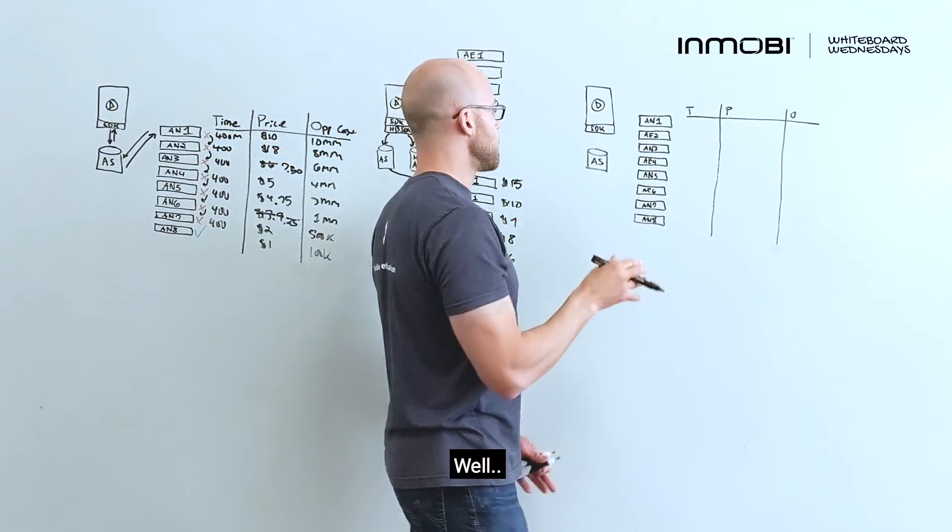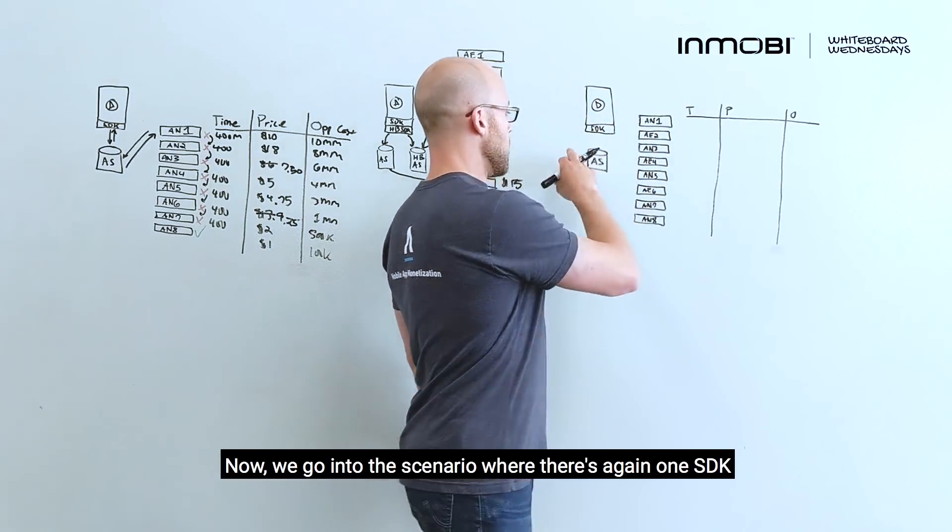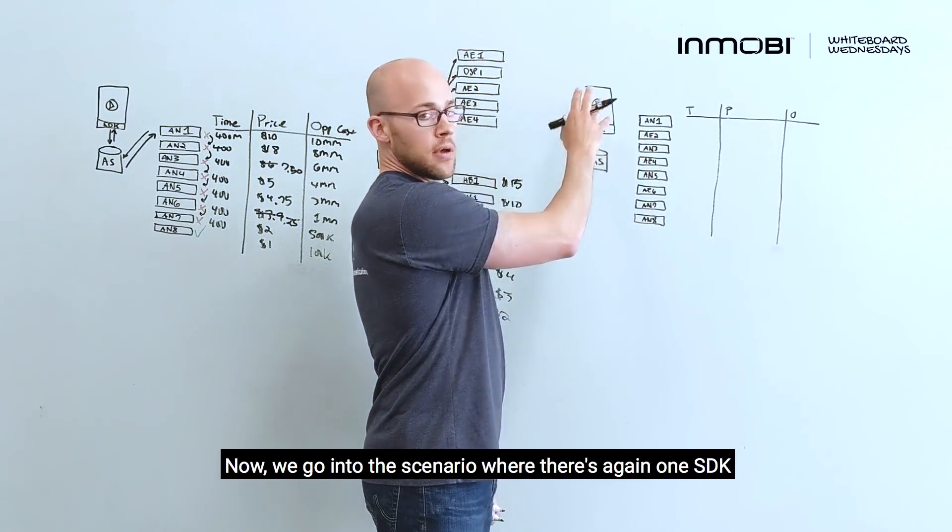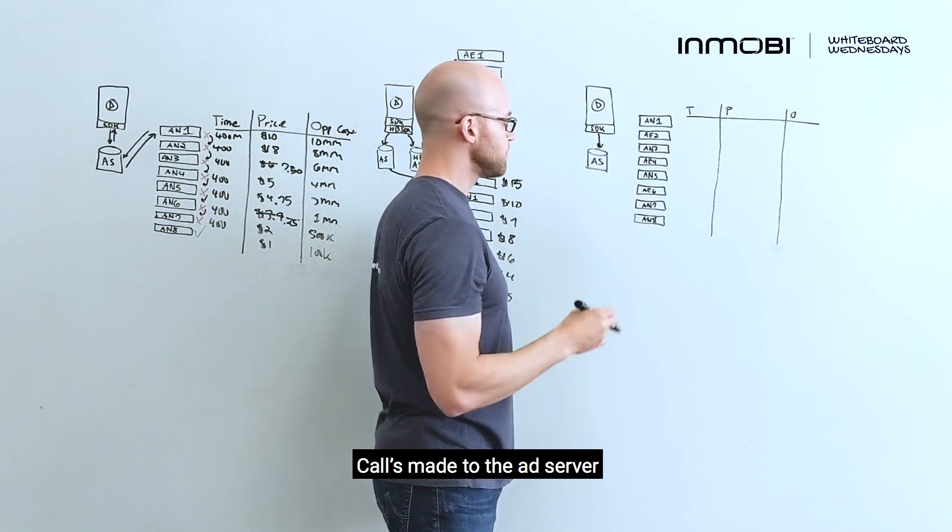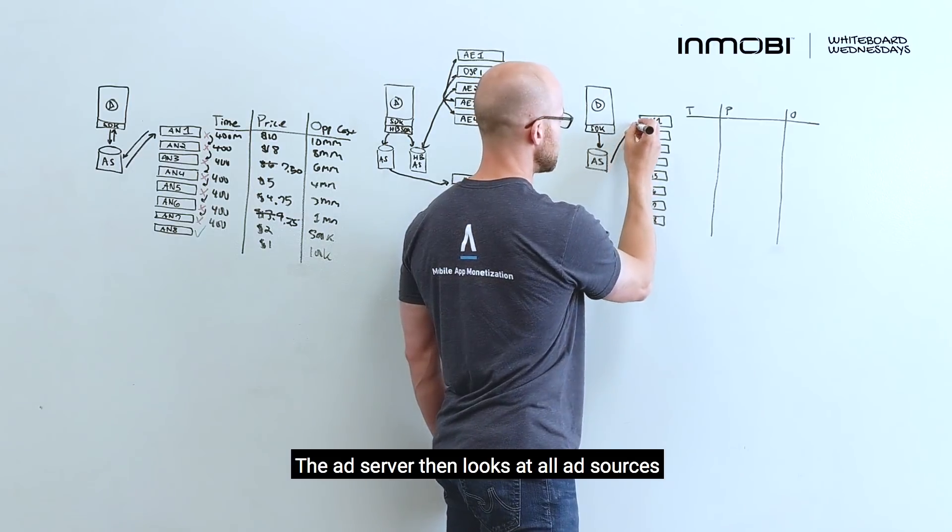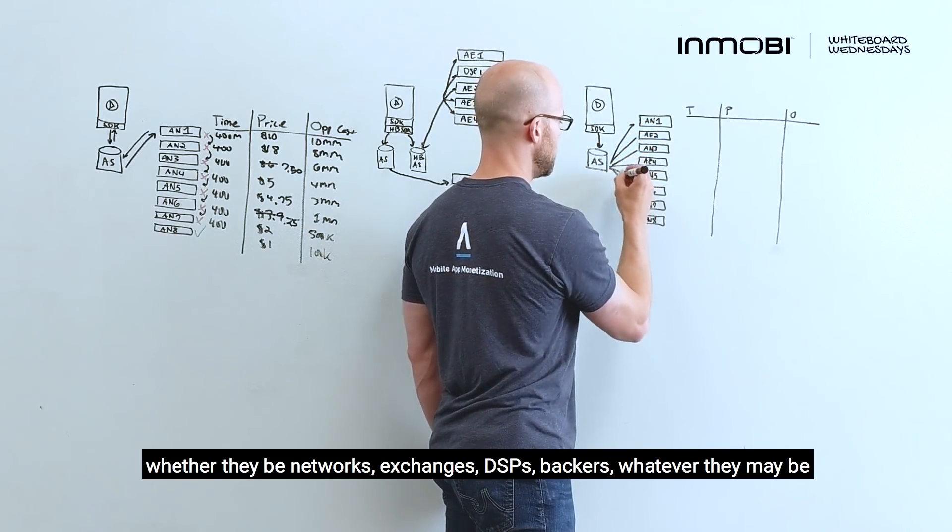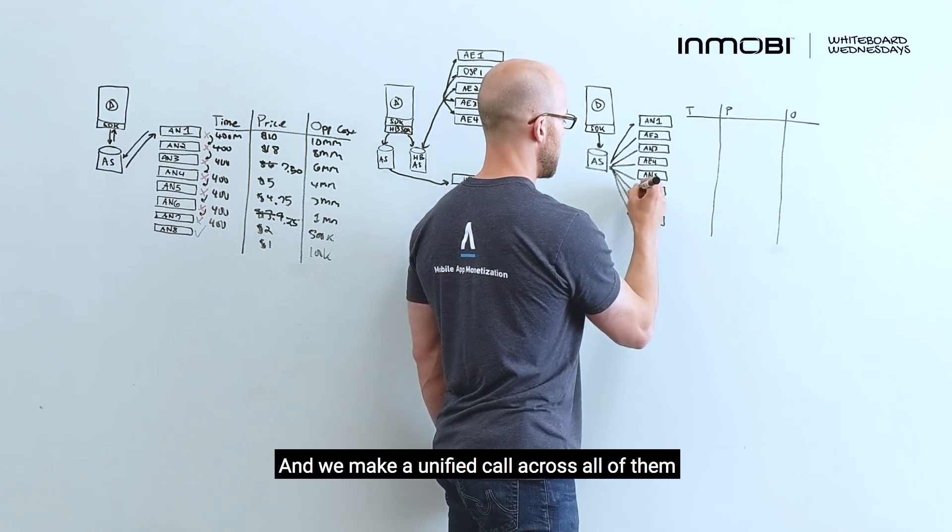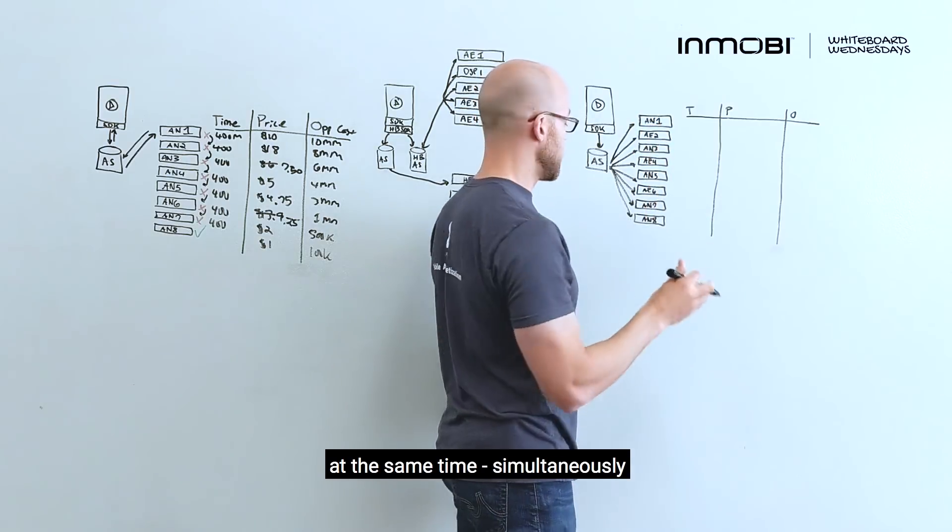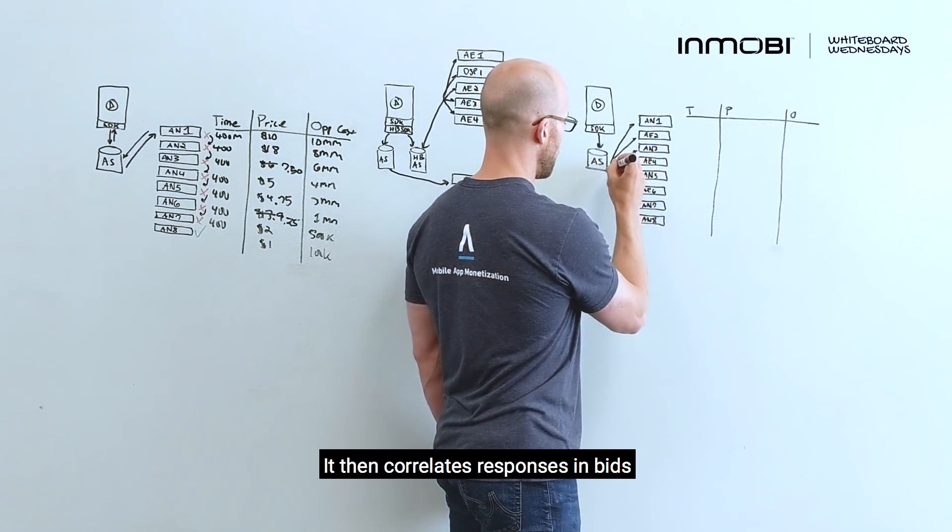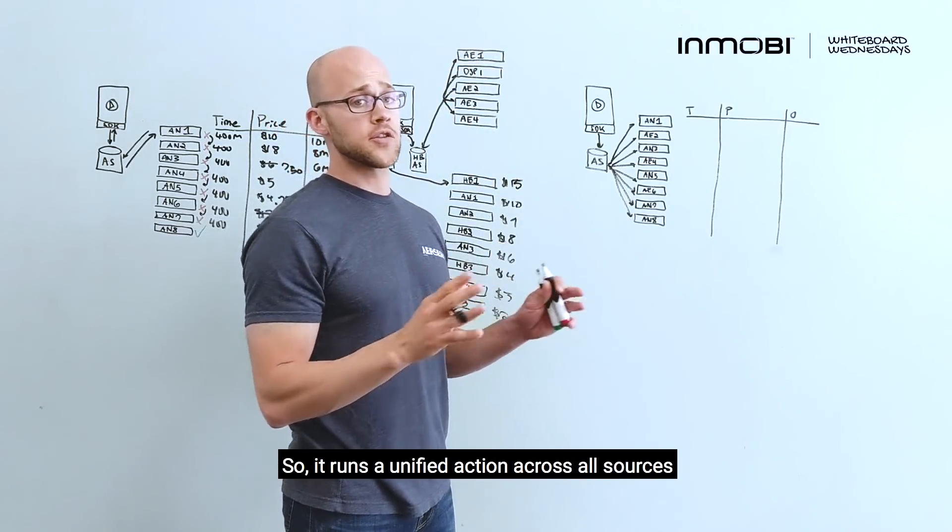What's better? Well, we feel that a unified auction is better. What does that mean? Now, we go to the scenario where there's, again, one SDK. Calls made to the ad server. The ad server then looks at all ad sources, whether they be networks, exchanges, DSPs, adapters, whatever it may be. And we make a unified call across all of them at the same time simultaneously. It then correlates responses and bids and passes that back to the ad server. So, it runs a unified auction across all sources.